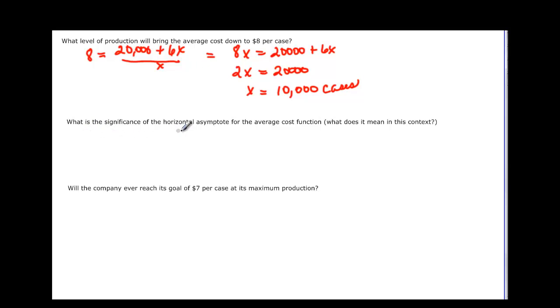And then it asks, what's the significance of the horizontal asymptote for the average cost function? This is the cost that large quantities of cases would tend toward. The cost tends toward, or never gets lower than, the horizontal asymptote. Let's figure out what the horizontal asymptote is.